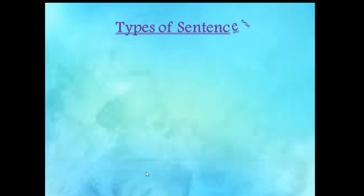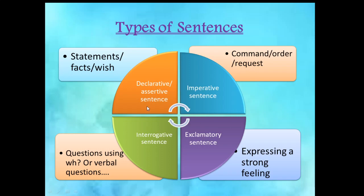Now let us learn the types of sentences. There are four types of sentences: declarative or assertive sentence, imperative sentence, interrogative sentence, and exclamatory sentence. A declarative or assertive sentence is one with statements, facts, or a wish. An imperative sentence is a command, order, or request. An interrogative sentence is a question using WH questions or verbal questions — WH questions include what, which, who; verbal questions are like 'Are you ready?' or 'Is your home located at Vashi?' An exclamatory sentence expresses a strong feeling, for example 'What a beautiful flower it is.' So these are the four types of sentences and their meaning in short.